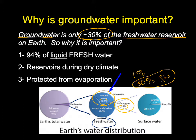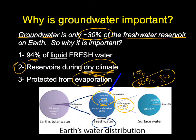Groundwater is also really important because it can be protected during droughts. Where rivers might dry up during a seasonal drought or even a multi-year drought, groundwater is protected from the process of evaporation. Check out that animation on As You Learn — it'll show you more about this. So even when surface water dries up, we can still have access to groundwater, making it a really important resource when we need critical freshwater reserves.